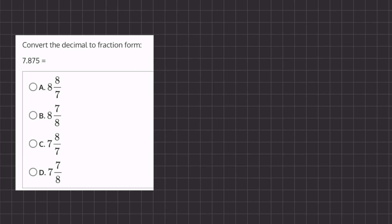In this problem we are asked to convert the decimal into fraction form. So we have 7.875. We know that this 7 is going to be the whole number of our fraction, and now let's see what this decimal is going to look like as a fraction.